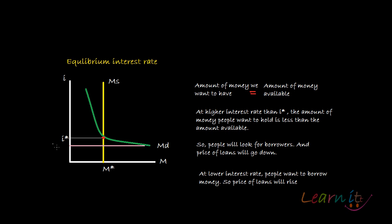At interest rate I2 — a lower interest rate — the amount of money people want is MD2. At a lower interest rate, the number of borrowers is more. The people who want to have money is more than the amount which lenders could actually loan out.